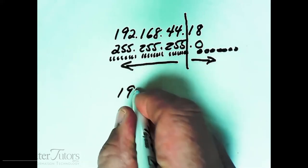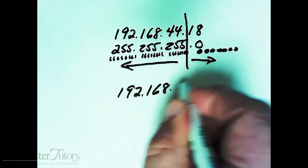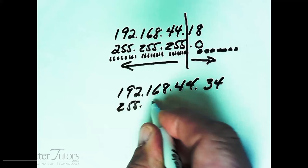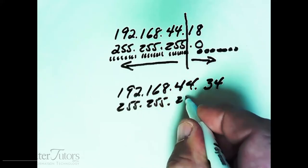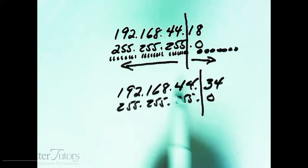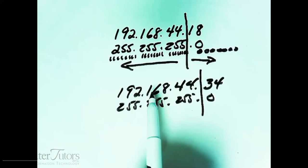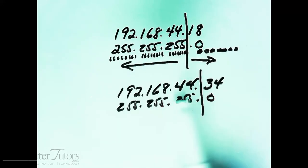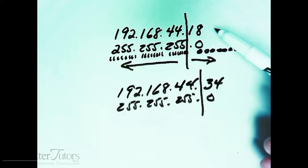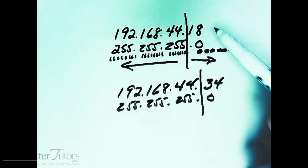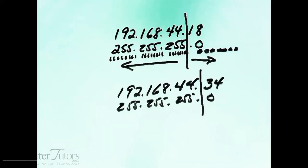If we had another computer on the same network — with the same subnet mask of 255.255.255.0 — the imaginary line is in the same place. You notice that these two computers happen to be on the same network. The network address is 192.168.44 for both. Computer 18 versus computer 34 — that gives each a unique number on the network, so we can identify computer 18 and computer 34.